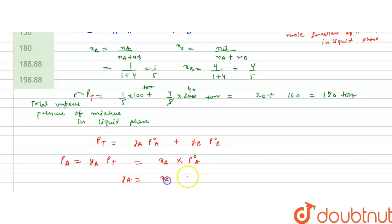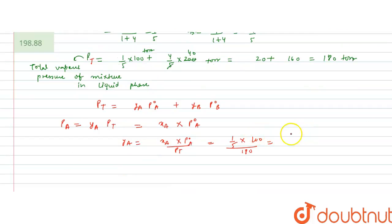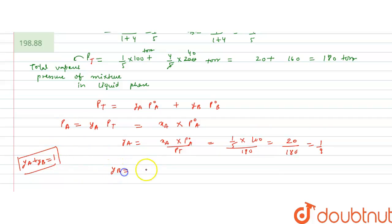YA = (1/5 × 100) / 180 = 20/180 = 1/9. Since YA + YB = 1, we get YB = 1 − 1/9 = 8/9. We can also verify this using the partial pressure of B: YB × P_total = XB × P°B, which similarly gives YB = 8/9.